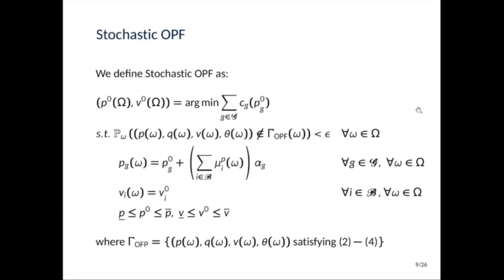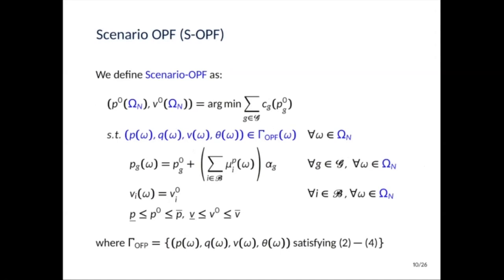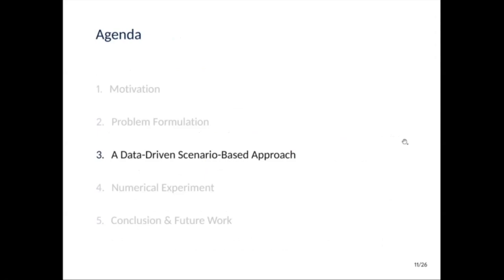But one issue with this problem is that omega is usually huge or infinite. So what we will focus instead on is this variation of the problem, which is called scenario OPF. So it's basically the exact same problem, but instead of having omega, we will have omega n, which we will need to be small in order to be able to tackle this problem. And ideally, it should be a good approximation of the original set omega. Now we don't need the constraints written as a probability constraint. So we want our solution to be feasible for every scenario in omega n. And the idea of the work would be to ideally reduce omega to omega n.